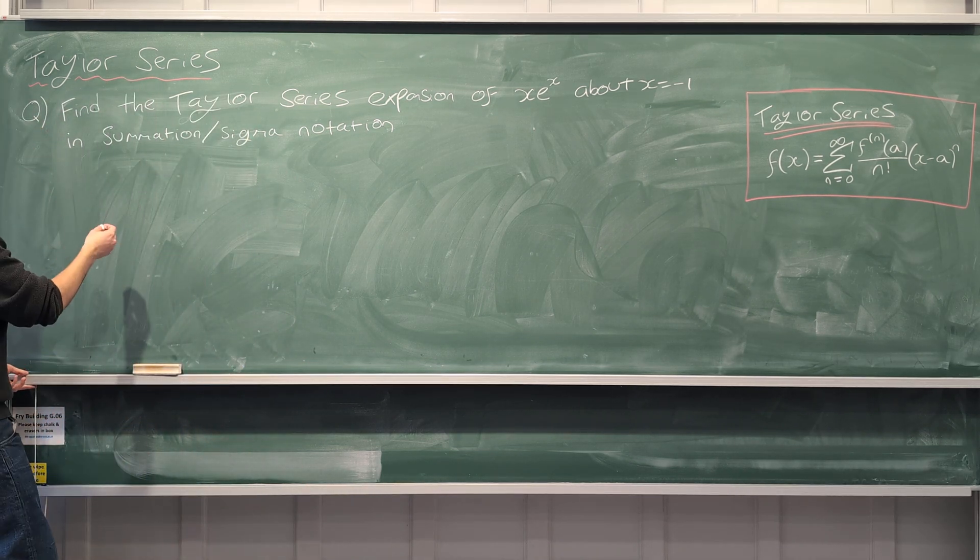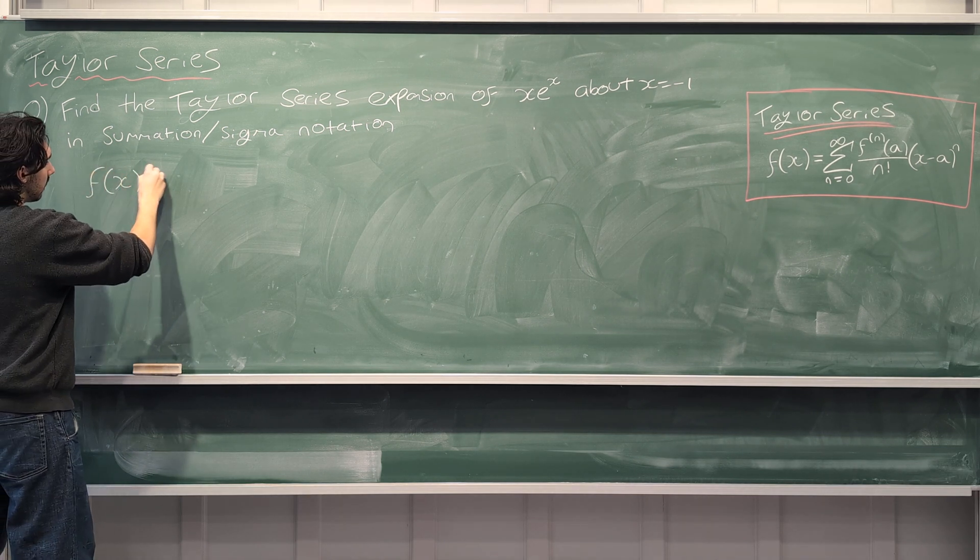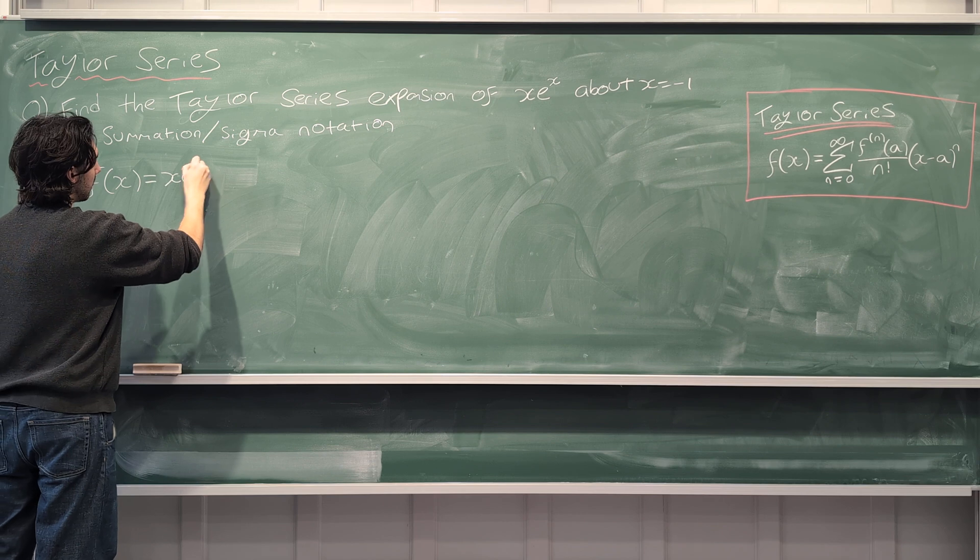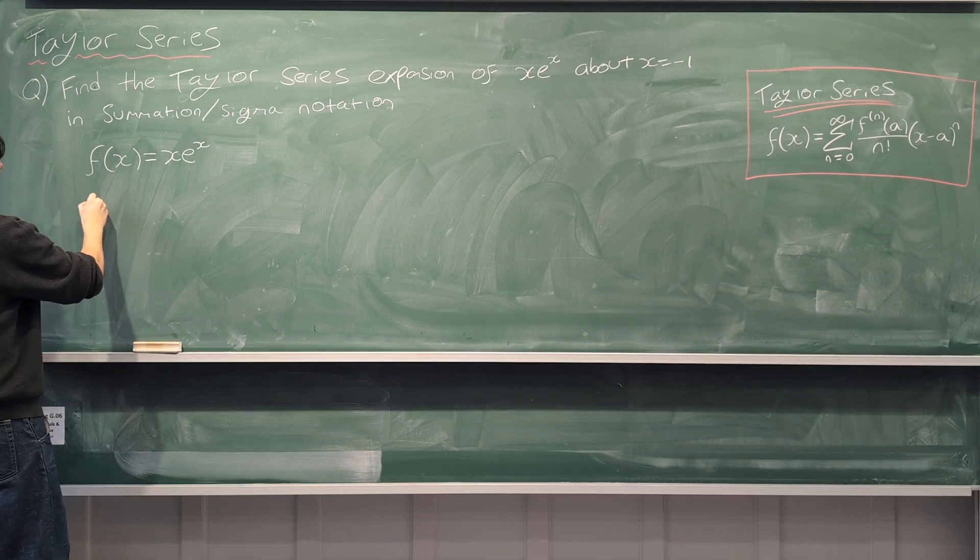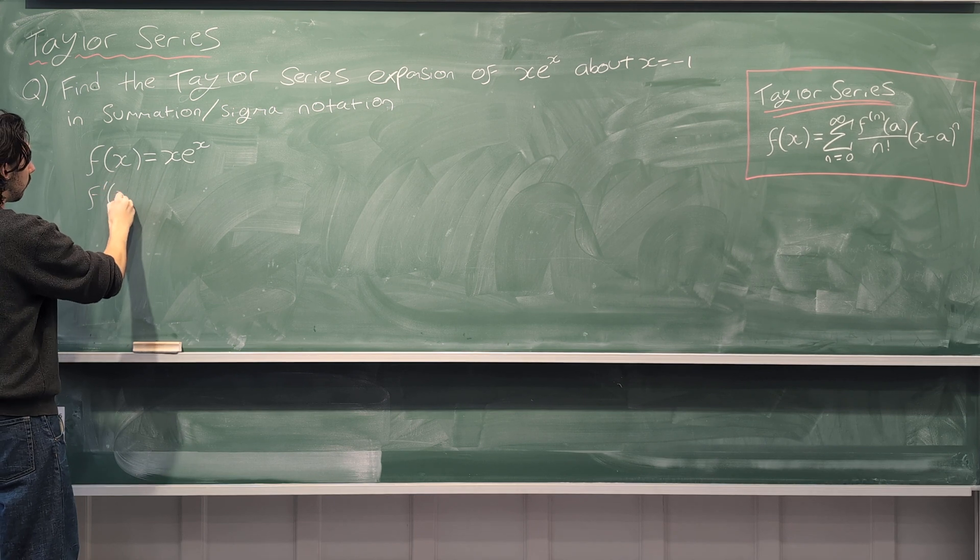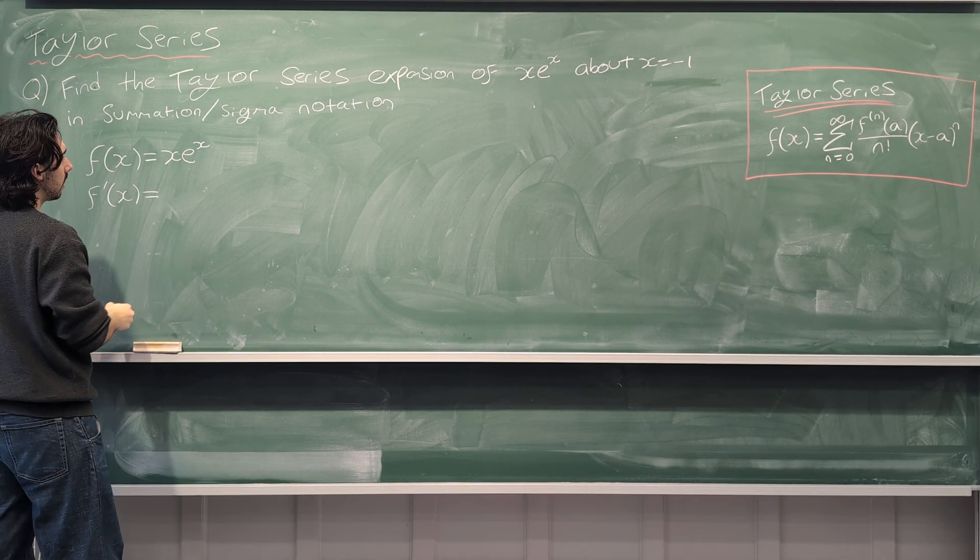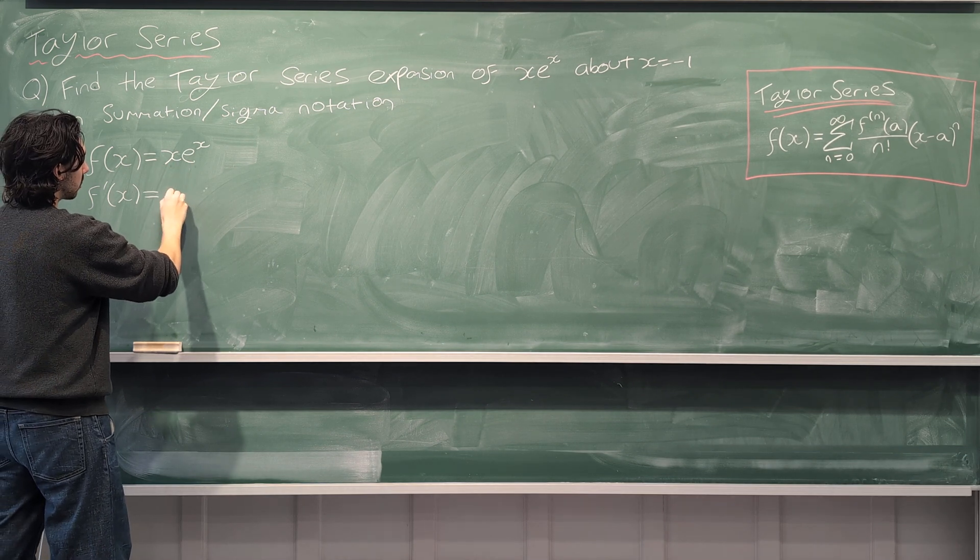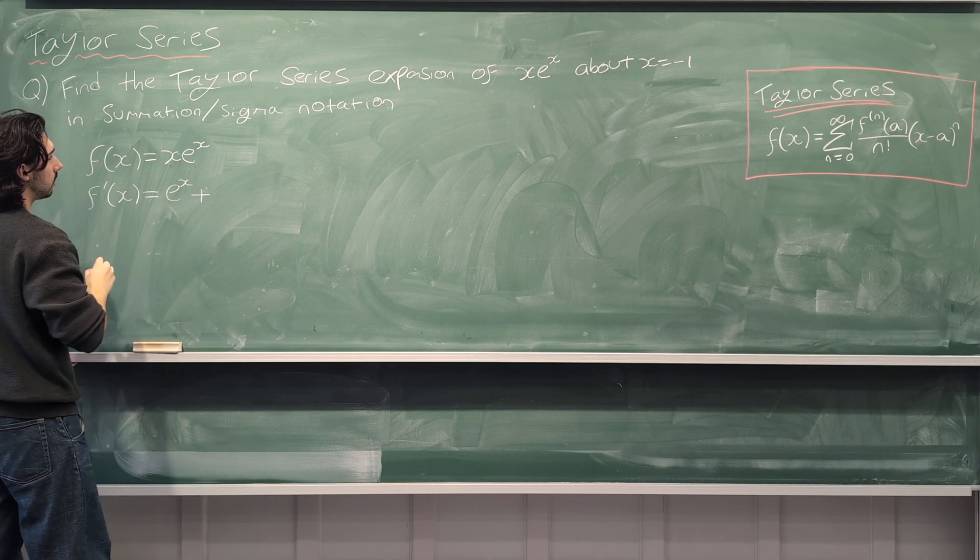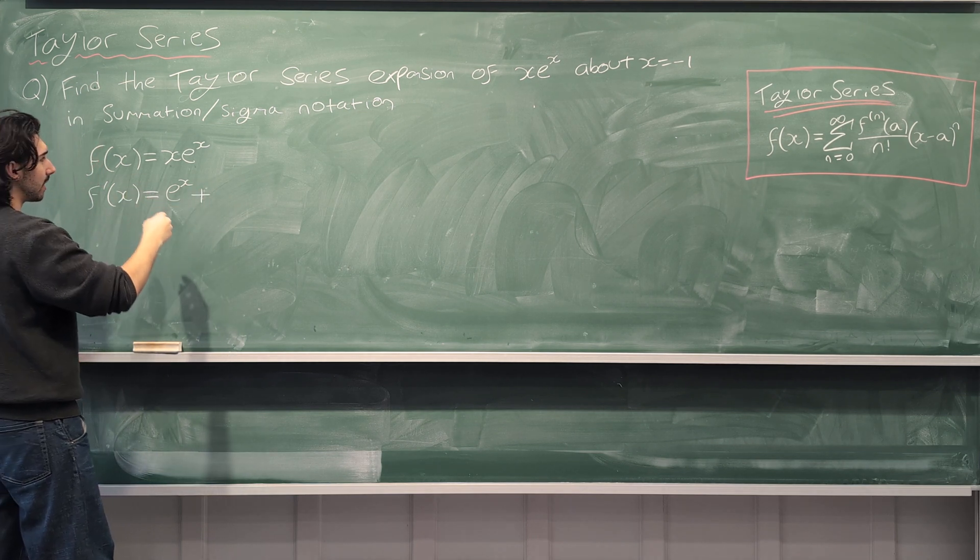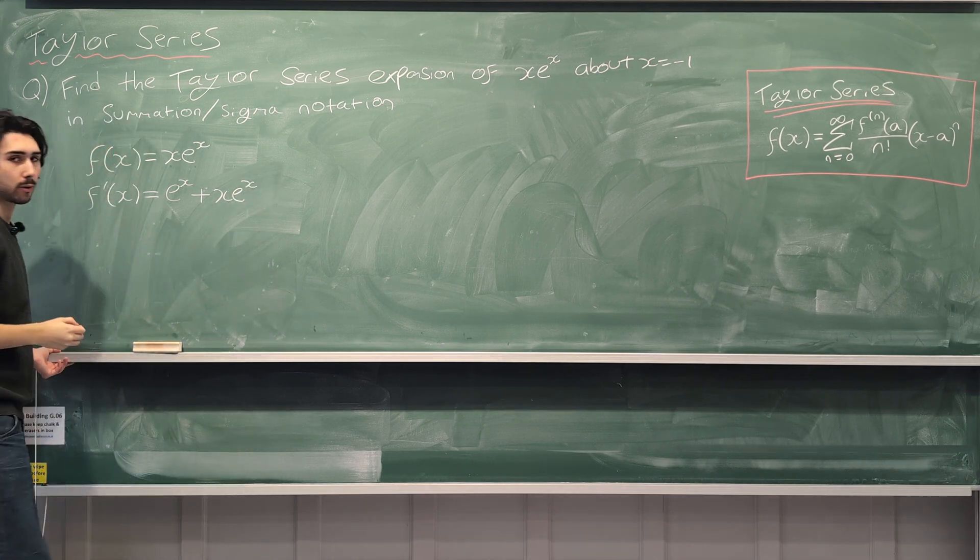The first thing that we should always do is write down the function. So f(x) in this question is xe^x. Then we should differentiate this, so the derivative of f(x), we're going to have to use the product rule to differentiate this. Differentiating x and then leaving e^x will have just e^x, and then plus differentiating e^x and leaving x will just have x times e^x because e^x differentiates to itself.